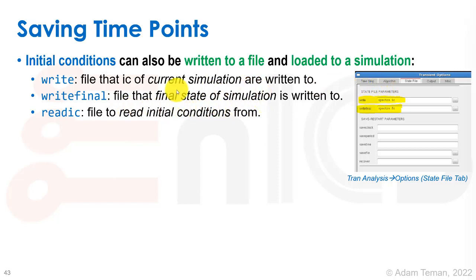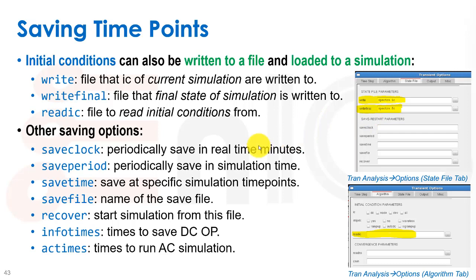If we spit out the initial condition at a certain time point, we can read it in and basically start our circuit from that time point. We have it here under transient analysis options, we can do write or write final. We have a whole array of other ones: save clock, save period, save time, save file, recover, info times, and AC times, which help us give different types of points along there that we can save and give different file names.